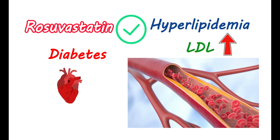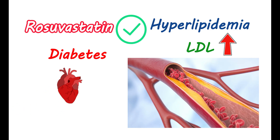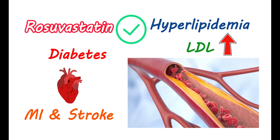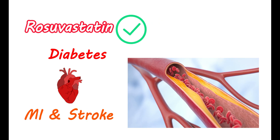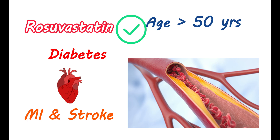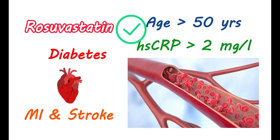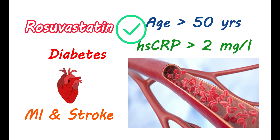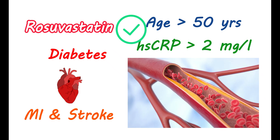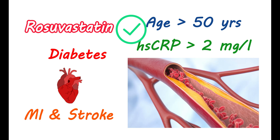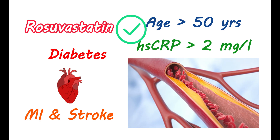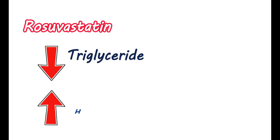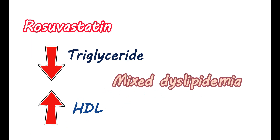It is indicated to reduce the risk of major adverse cardiovascular events like nonfatal myocardial infarction and stroke. A few risk factors for cardiovascular events include age above 50 years, elevated highly sensitive C-reactive protein above 2 mg per liter, high blood pressure, low HDL values, a family history of heart disease, or smoking. In such conditions, rosuvastatin can be used for primary prevention. This medication can also lower triglyceride levels and increase HDL levels, making it useful in the treatment of mixed dyslipidemia.